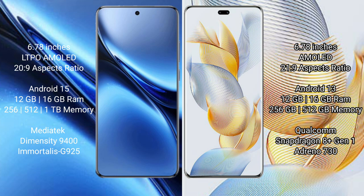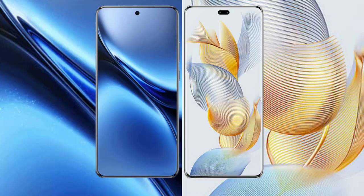Vivo X200 Pro comes with 12GB or 16GB RAM and 256GB or 512GB or 1TB internal storage, with a MediaTek Dimensity 9400 processor and GPU Adreno 925. Honor 90 Pro comes with 12GB or 16GB RAM and 256GB or 512GB internal storage, with a Qualcomm Snapdragon 8 Gen 1 processor and GPU Turbo.